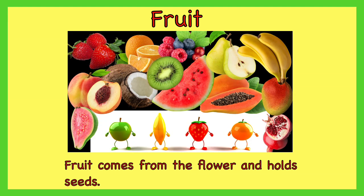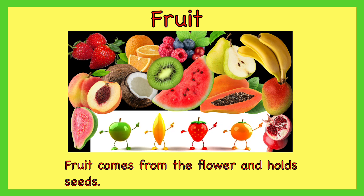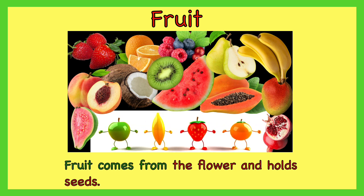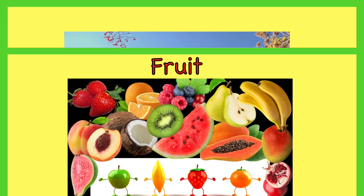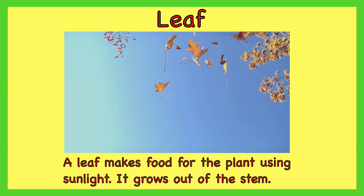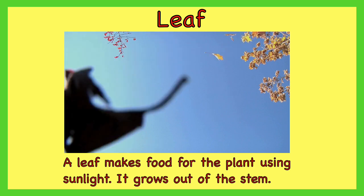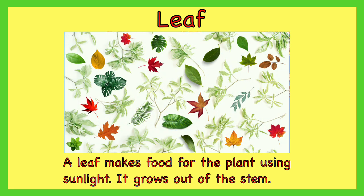Fruit. Fruit comes from the flower and holds seeds. Leaf. A leaf makes food for the plant using sunlight. It grows out of the stem.